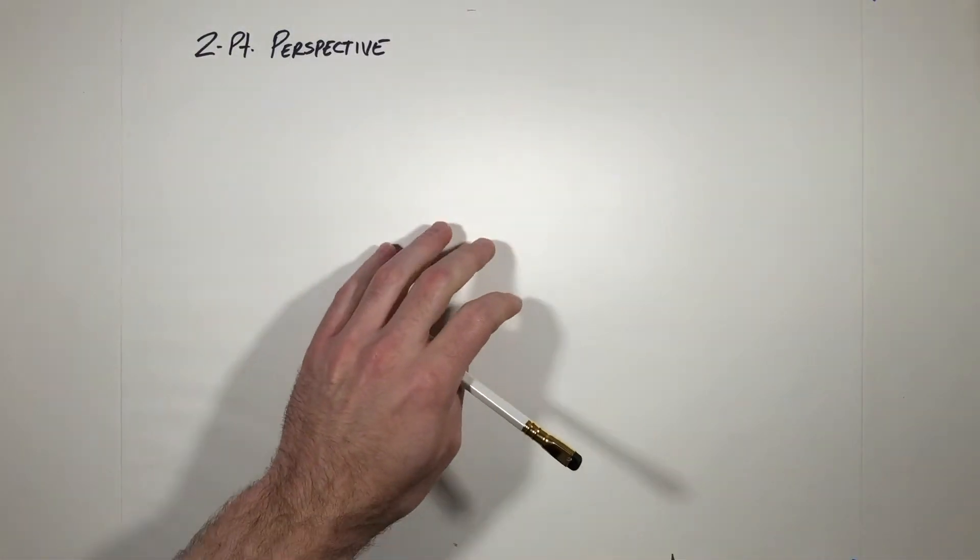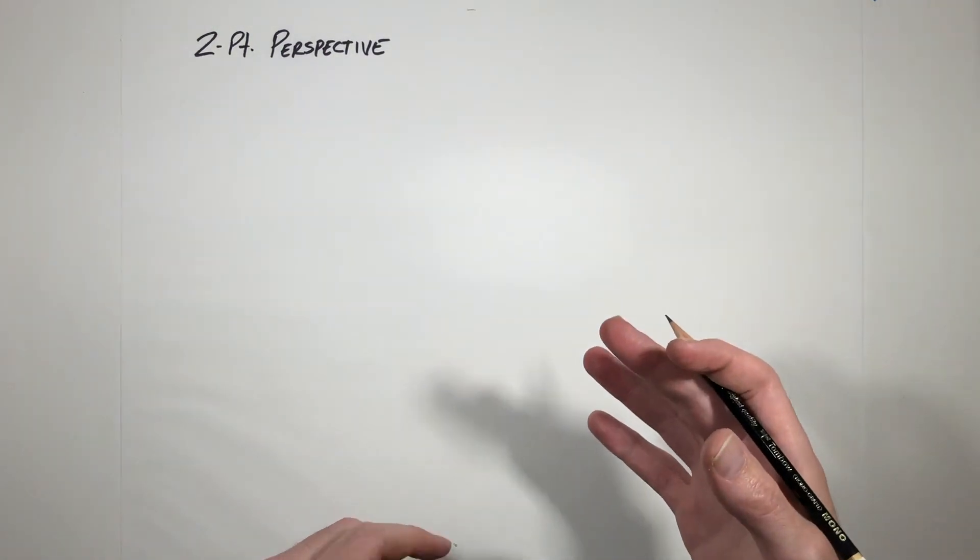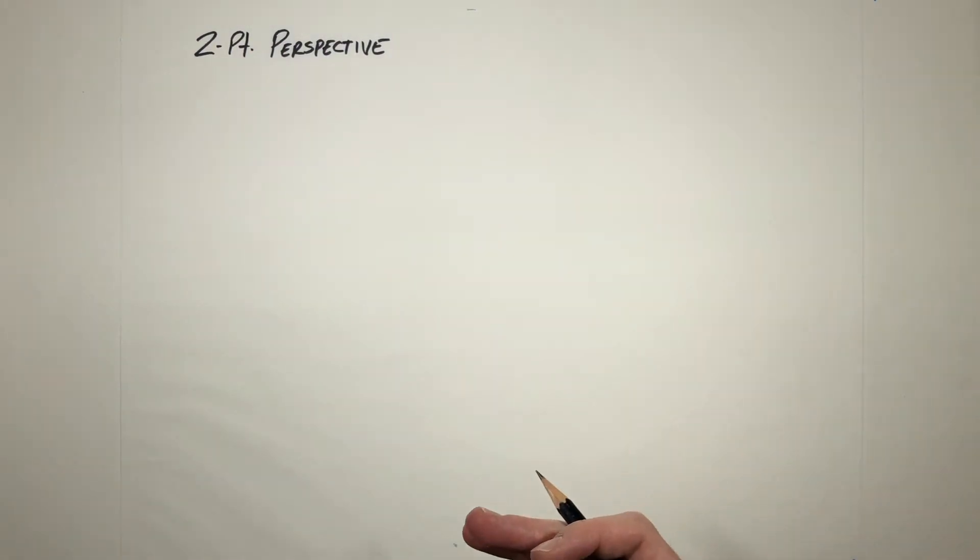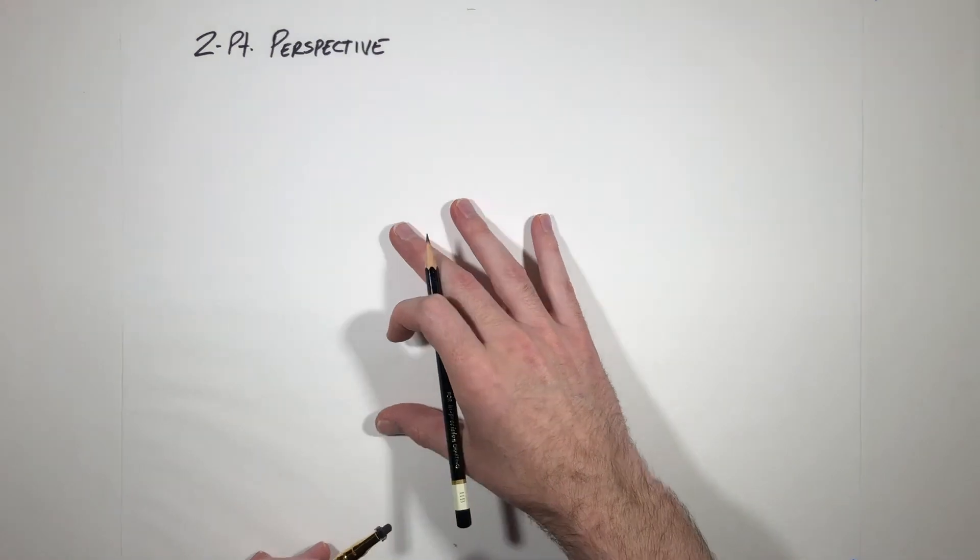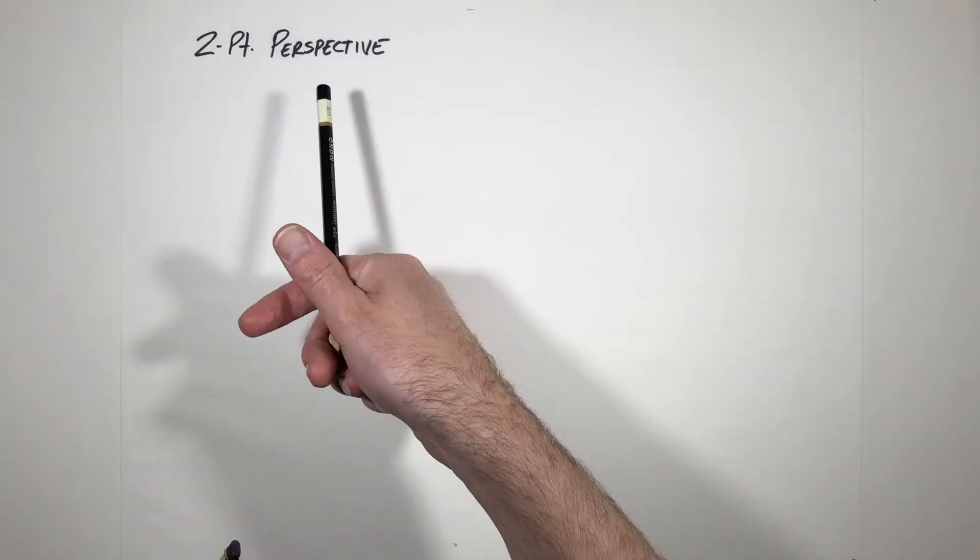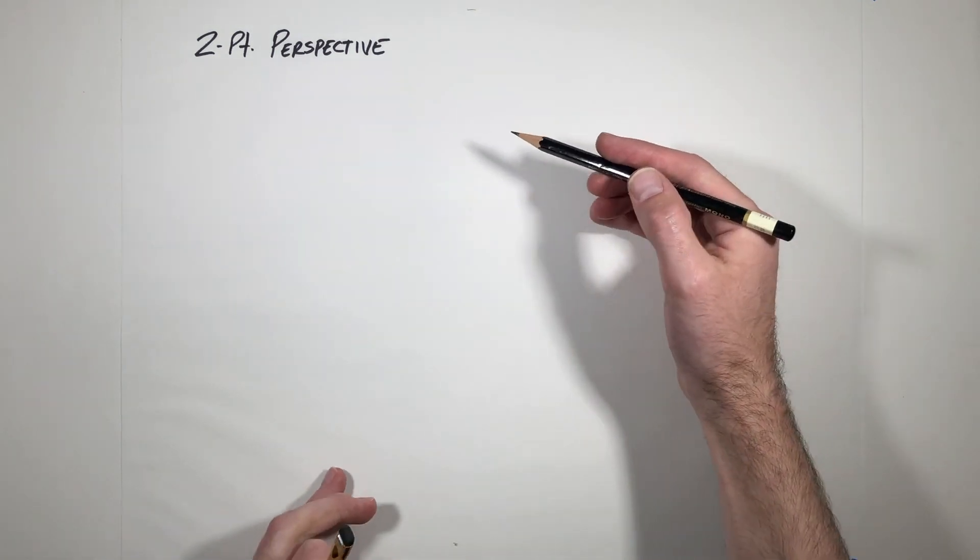Okay guys, back to two-point perspective. This time, just like with one-point perspective, thinking about how we can draw these cubes from different viewpoints, from our imagination, but using our knowledge of the perspective lines.